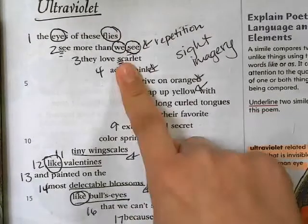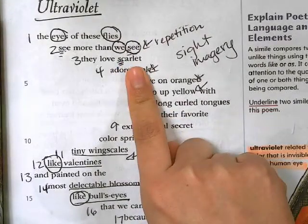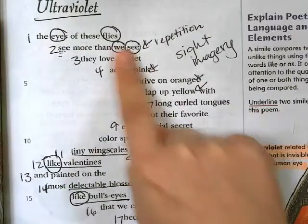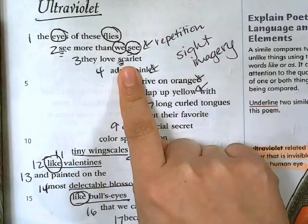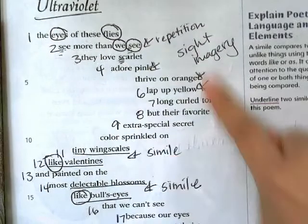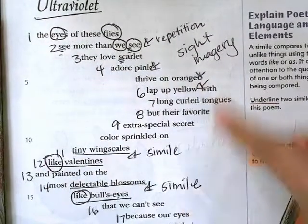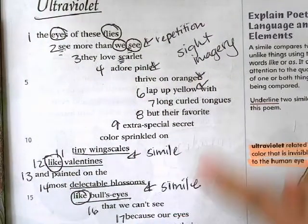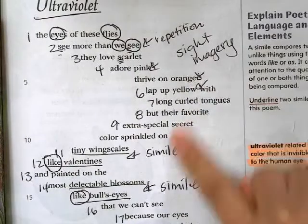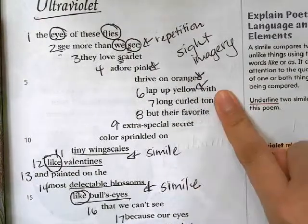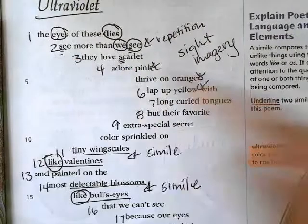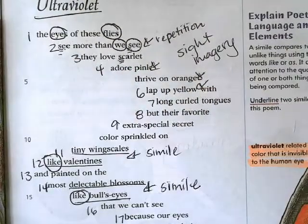We circled repetition. We circled rhyme. We also noticed that this used a lot of imagery — a lot of sight. It appealed to our sight. And then we also saw the alliteration here.